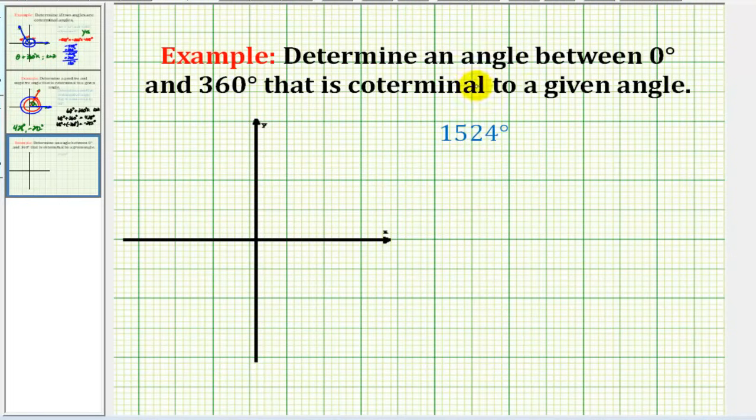In this example, we determine an angle between zero and 360 degrees that is coterminal to 1524 degrees. Remember, coterminal angles have the same terminal side if sketched in standard position.